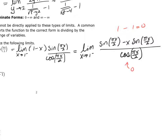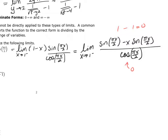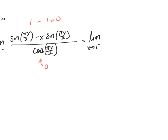Go ahead and do the derivative of the numerator and denominator and see if you can do direct substitution at that point. When I do the derivative, I have the limit as x approaches 1 from the left. The derivative of sine is cosine of πx/2, and don't forget to do the derivative of the angle — so multiply by π over 2.